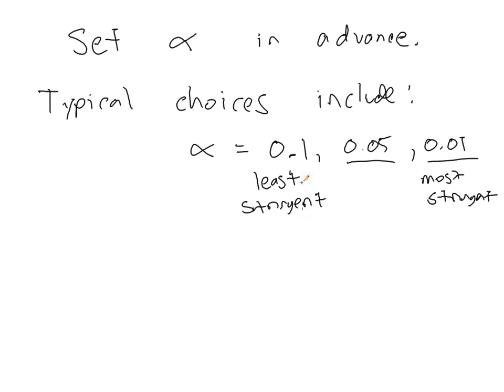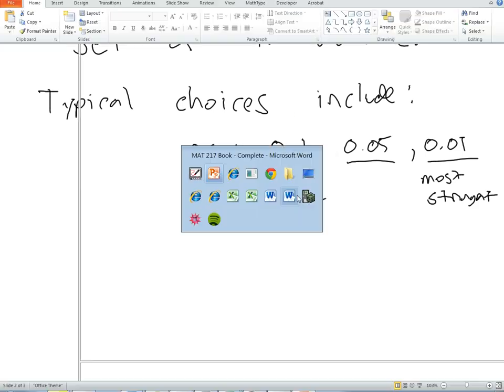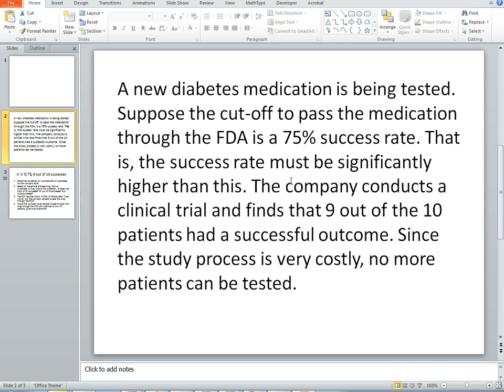And you may not be able to tolerate a large error rate. Versus if you're looking at a survey, and the survey doesn't have gigantic impacts, or potential impacts, then you may be satisfied with just a 10% error rate. Now it doesn't mean you will run into an error,